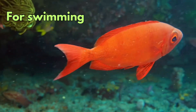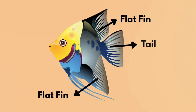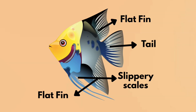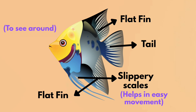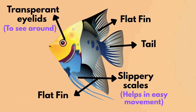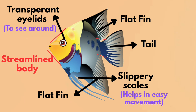For swimming, fish use their flat fins and tails. They have slippery scales on their body which help in easy movement. To see around, they have transparent eyelids. They also have a body that tapers towards both ends — we call such a body a streamlined body — which helps them swim faster.